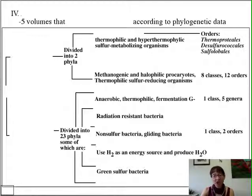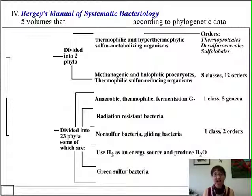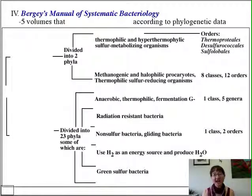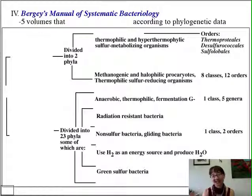There was a first edition, which was very phenotypic in nature — it looked primarily at phenotypic characteristics. It was split into four volumes: the first was gram-negatives of medical and industrial importance; the second was gram-positives excluding the actinomycetes; the third was other gram-negatives; and the last was other gram-positives, including the actinomycetes. So this is just a very phonetic way of classification.